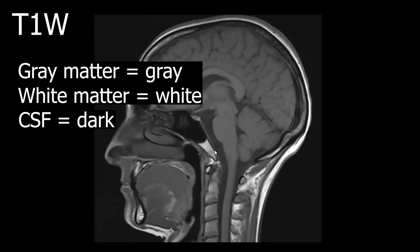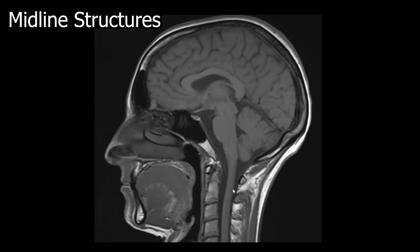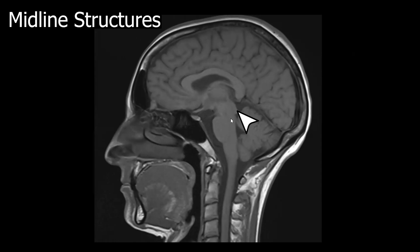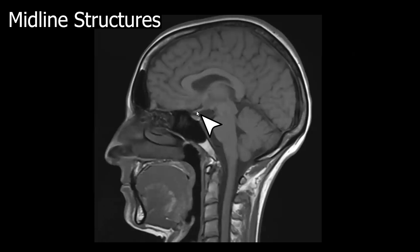The sagittal T1 is a great sequence to look at midline structures, such as the cervical spine and cervical cord, cervical medullary junction, brain stem including medulla, pons, and midbrain, the tectal plate, cerebellar vermis, mammillary body, hypothalamus, pituitary infundibulum, optic chiasm, corpus callosum, and the fornix. Let me show you this one more time.